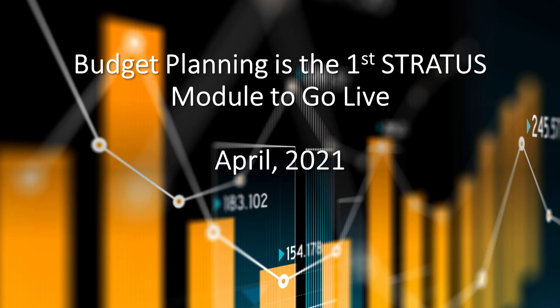With the most accurate data and forecasts available, budget planning will support University leaders in their abilities to keep Towson in a strong and stable financial status. We're excited that the budget planning module is scheduled to go live April 2021. Budget planning training has been scheduled for applicable users and will take place in late March. This is the first Stratus module to go live in advance of the overall Stratus implementation scheduled for October 2021.